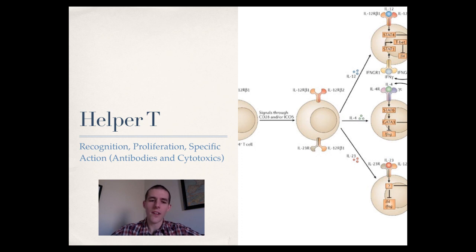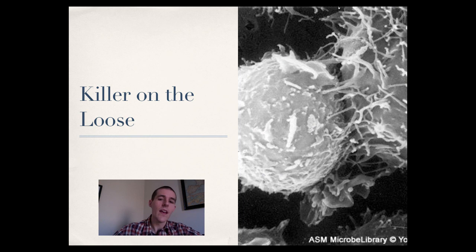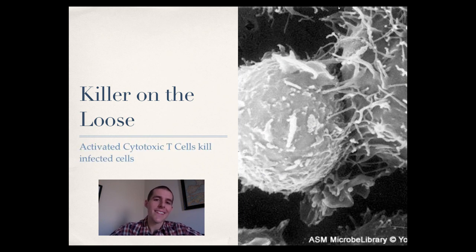So helper T cells kind of set off the whole process. Cytokines do some signaling. And based on that signaling, you get a multitude of responses. Once those cytotoxic T cells have been activated, they're kind of like a killer on the loose. And what they do is they're going to start circulating through the bloodstream. And they're going to recognize infected cells that are presenting a piece of the antigen that they have just been told about. Once that recognition has been made, those cytotoxic T cells can do a couple things.